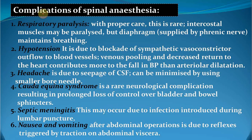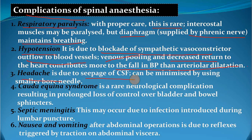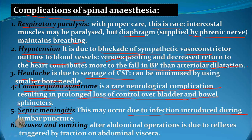Implications of spinal anesthesia: respiratory paralysis — with proper care it is very rare, as the intercostal muscles may be paralyzed but the diaphragm maintains breathing as it is supplied by the phrenic nerve. Hypotension is due to blockage of sympathetic vasoconstrictor outflow to blood vessels; venous pooling and decreased return to the heart contributes more to the fall in blood pressure than arterial dilation. Headache is due to leakage of CSF and can be minimized by using a smaller bore needle. Cauda equina syndrome is a rare neurological complication resulting in prolonged loss of control over bladder and bowel sphincters. Septic meningitis may occur due to infection introduced during lumbar puncture. Nausea and vomiting after abdominal operations are due to reflexes triggered by traction on the abdominal viscera.